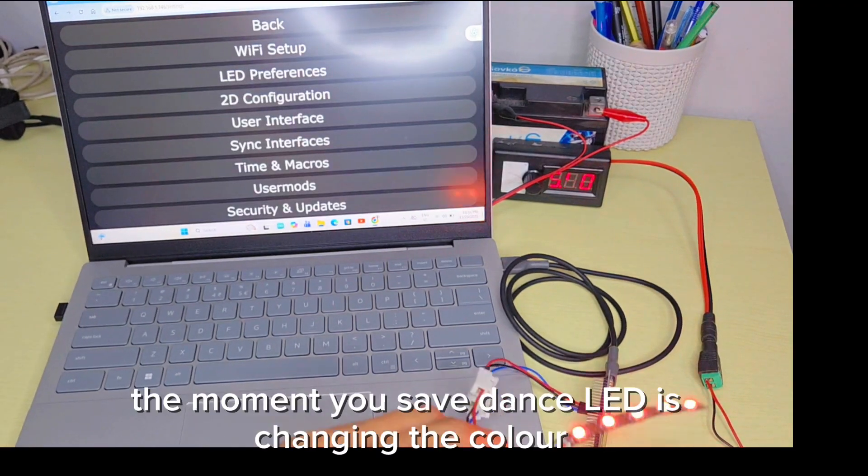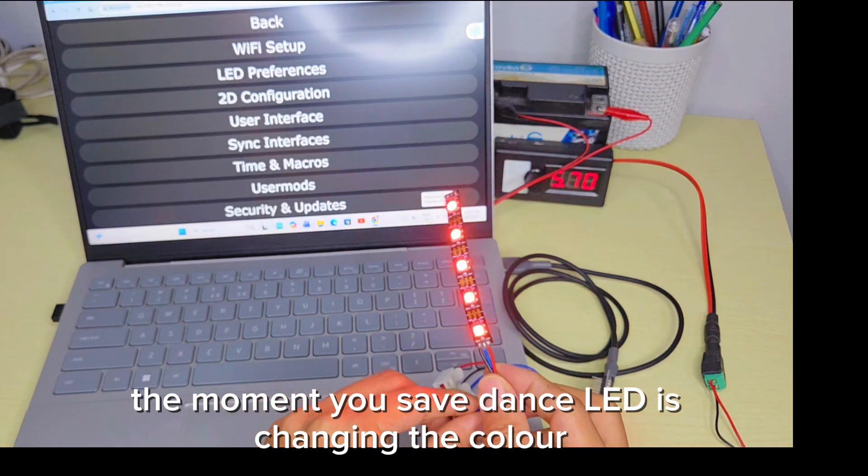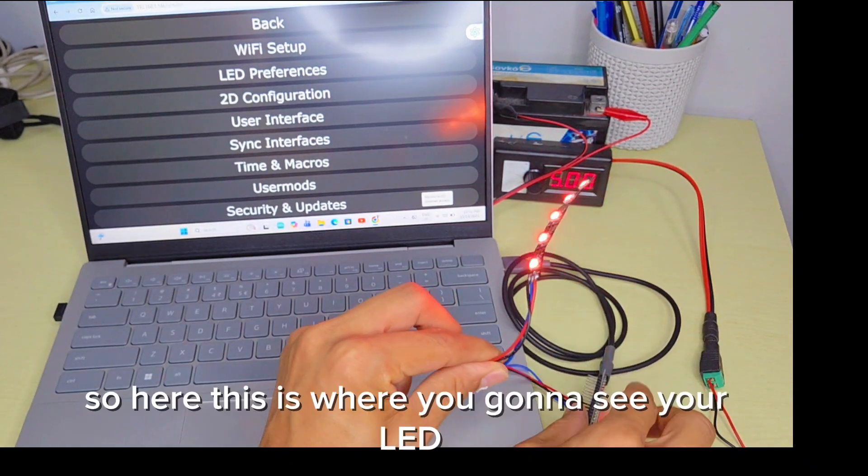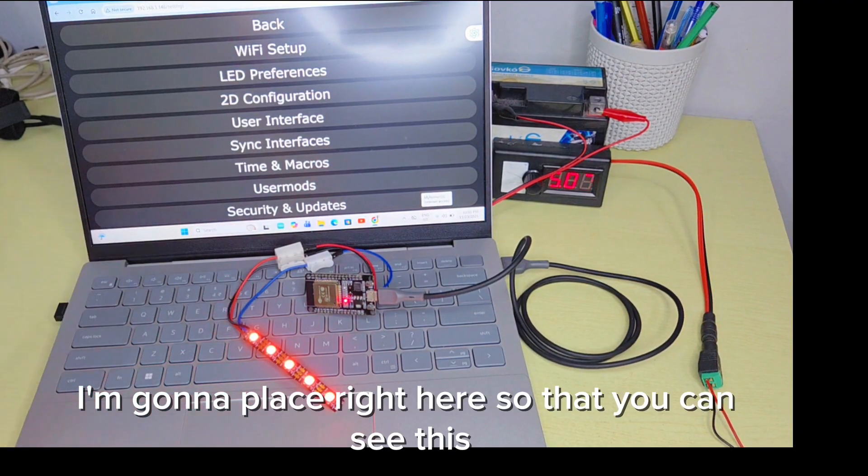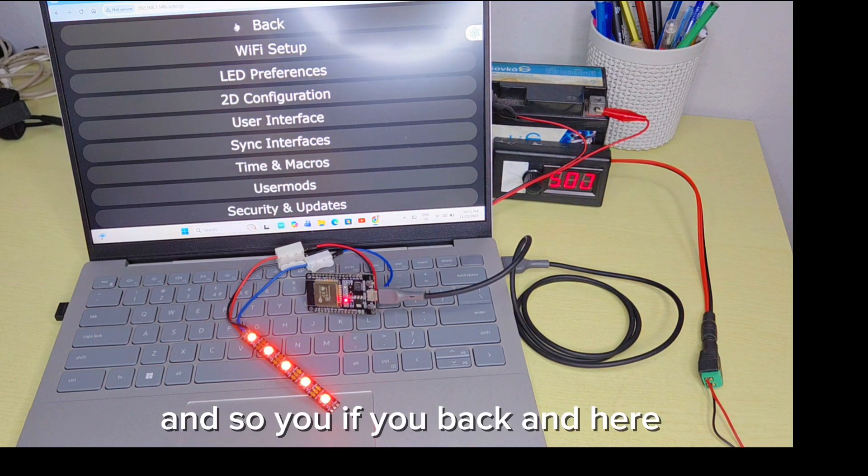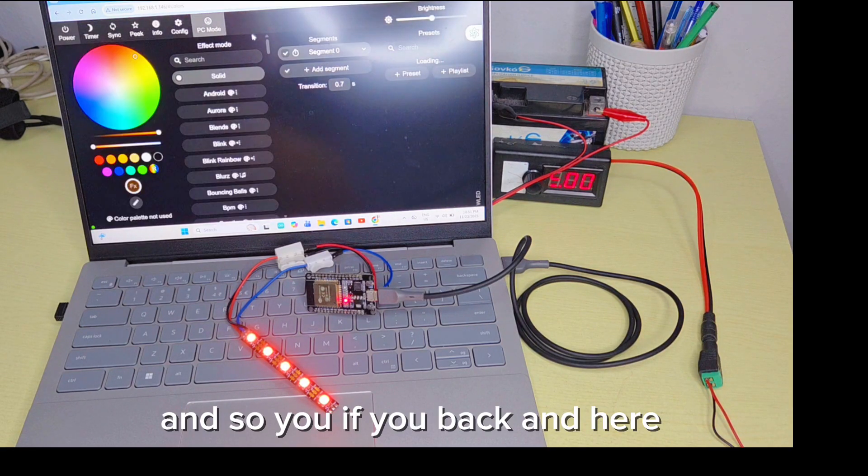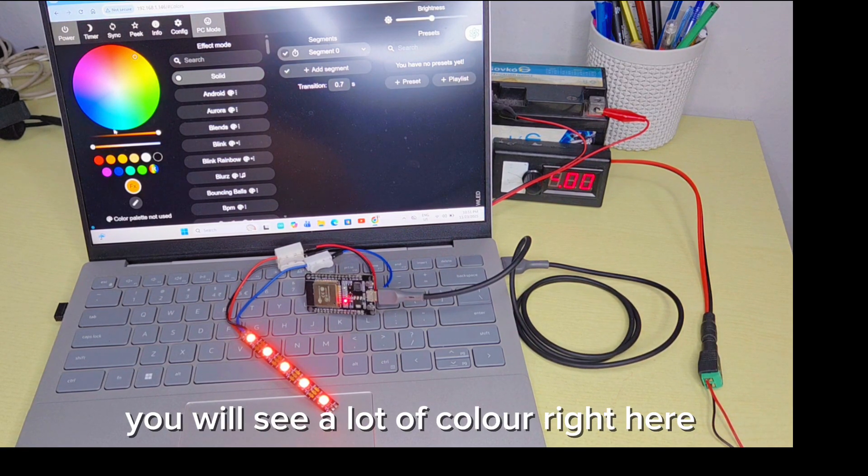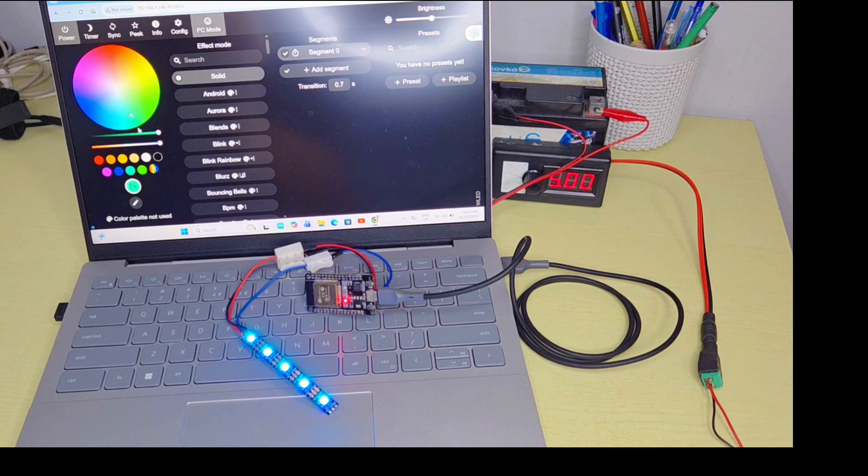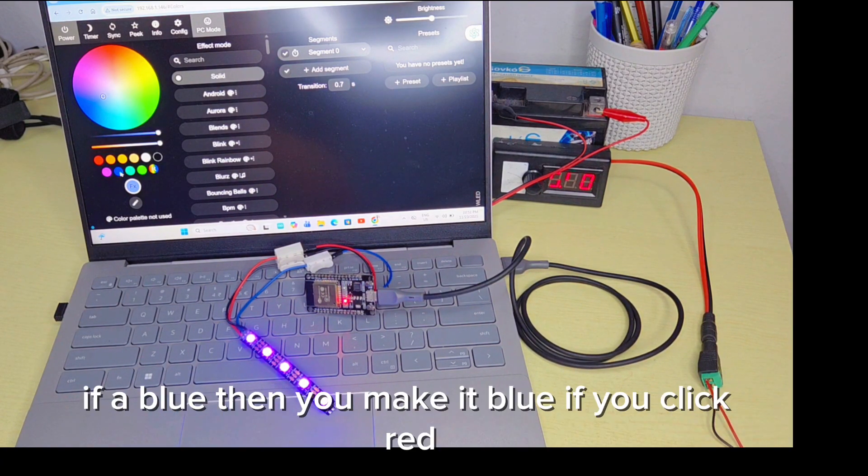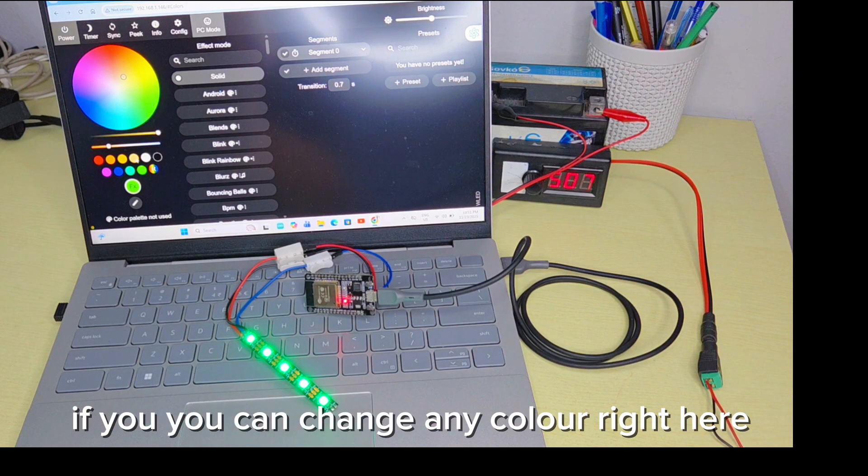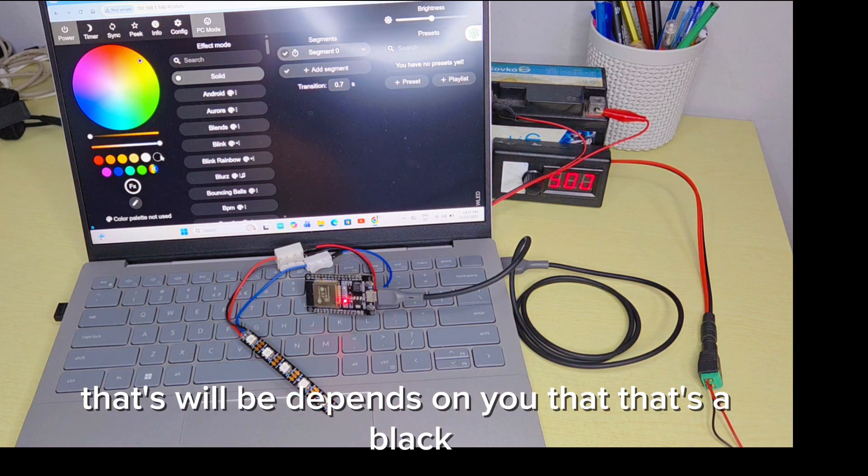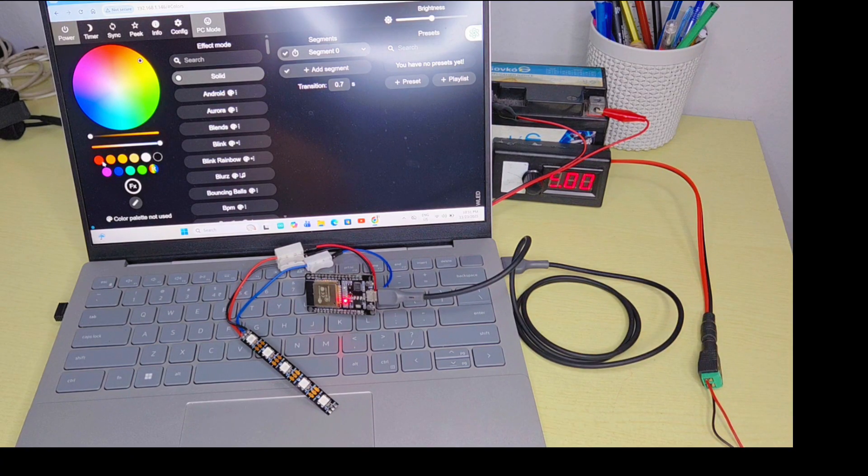The moment you save, the LED is changing color. This is where you're going to see your LED. You will see a lot of colors here. If you click here, the color will change. A lot of colors you can change. If blue, then you make it blue. If you click red, this will get red. You can change any color that will be depending on you. Black is nothing, it's dark.